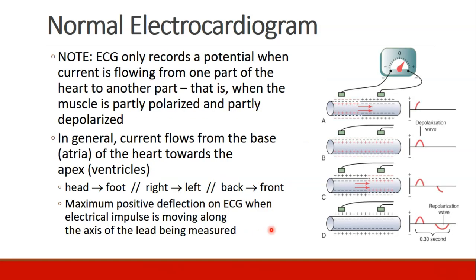The EKG only records a potential when current is flowing from one part of the heart to another, meaning the muscle must be partly polarized and partly depolarized. In general, current moves in the heart from the base — or from the atria — down towards the apex or the ventricles. So impulses are generally moving from head towards foot, from the right side to the left side, and from the patient's back towards their front.